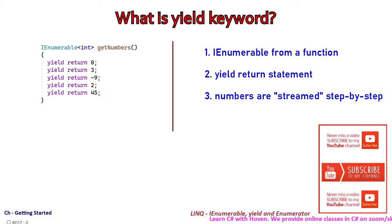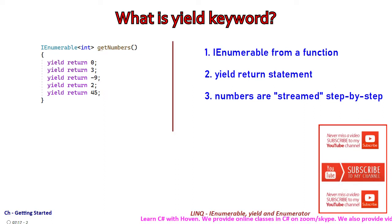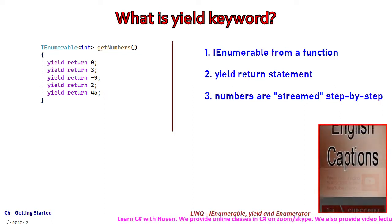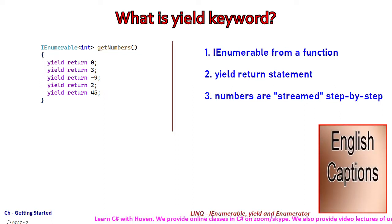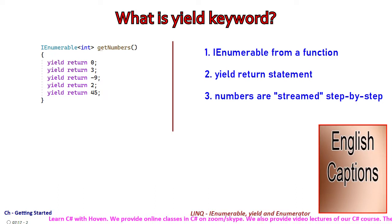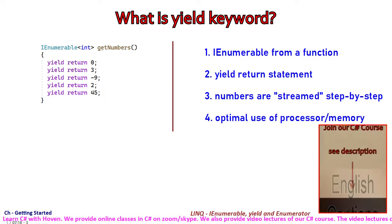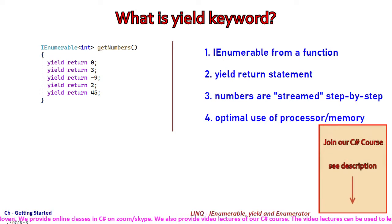It is a C# feature that successively executes each yield return statement after each call to the getNumbers function. Notice that all numbers are not returned in one step — multiple calls are needed to stream the numbers. This technique makes optimal use of both the processor and memory.